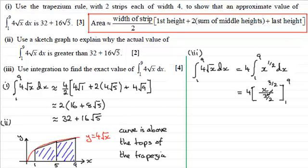So 4 divided by 3 over 2 is exactly the same as 8 over 3. If we substitute our values in, x equals 9 first of all, we've got the square root of 9 all cubed, and then we subtract what we get when we put x equals 1 in, so it'd be the square root of 1 all cubed.